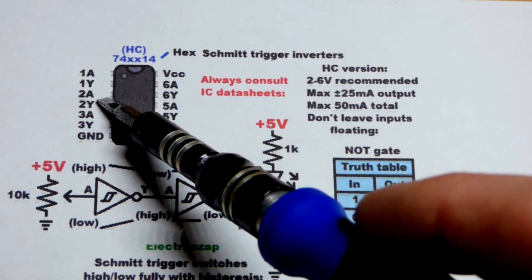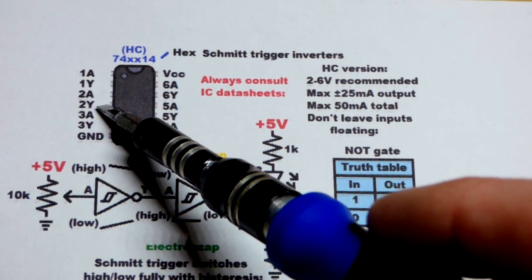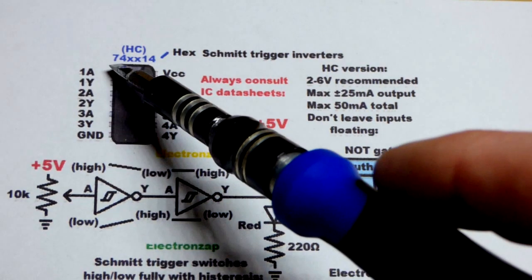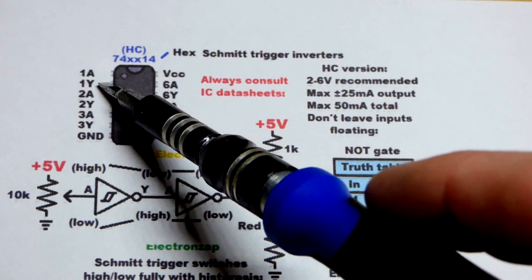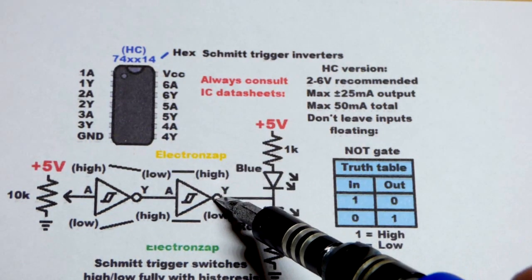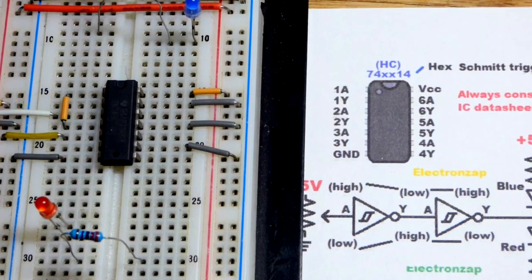We're going to give the signal to 2A, and then 2Y is going to give a signal to 1A, which will determine what that 1Y is for the output.